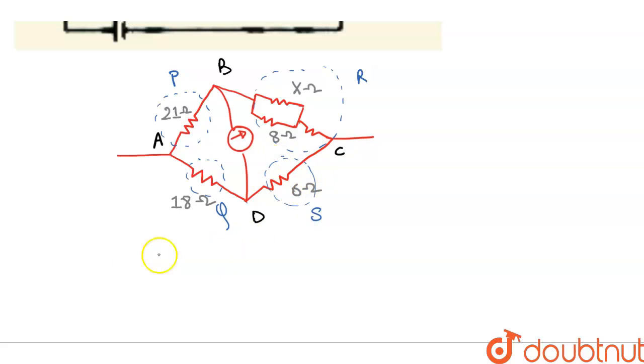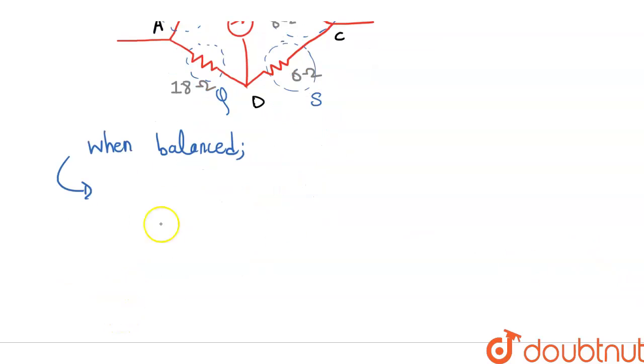So for the balanced Wheatstone Bridge, when balanced, we will see that the ratio of P over Q is equals to R over S. We will use this.